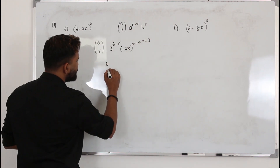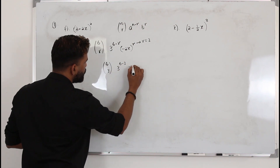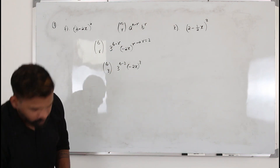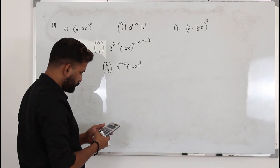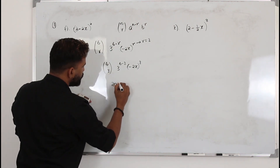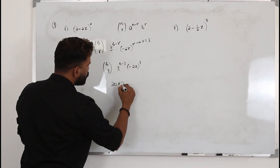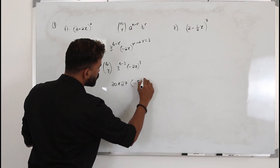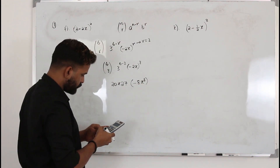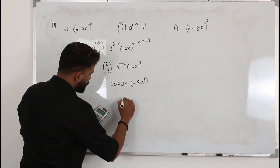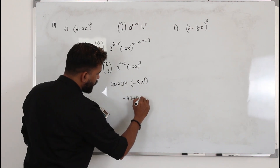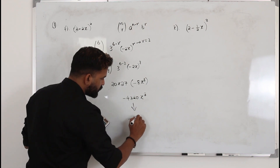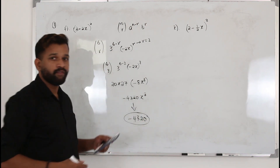Replace r by 3: 6C3 · 3^(6−3) · (−2x)^3. Simplify carefully: 6C3 is 20, times 3³ which is 27. Expanding (−2)³ gives −8, so you get 20 × 27 × (−8)x³ = −4320x³. When they ask for the coefficient of x³, we don't write x³ — so the answer is −4320.